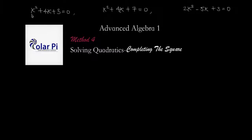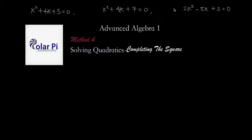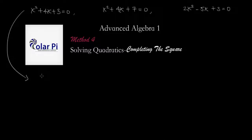We start with quadratics written in standard form set to equal zero, and then we complete the square. All three examples I'm going to use are written in standard form set to equal zero. The goal is to take them from standard form and then write them in their vertex form.